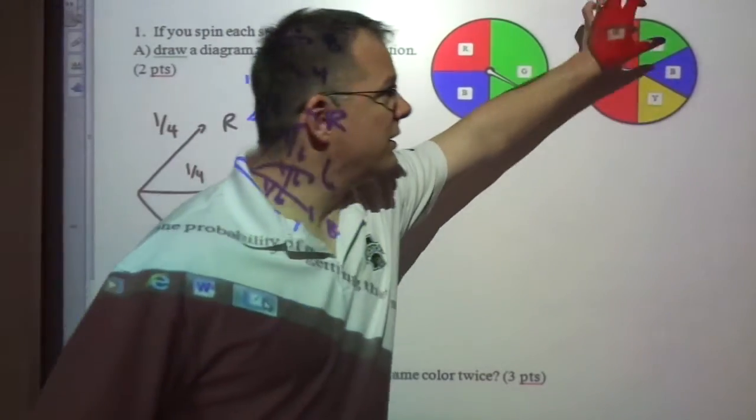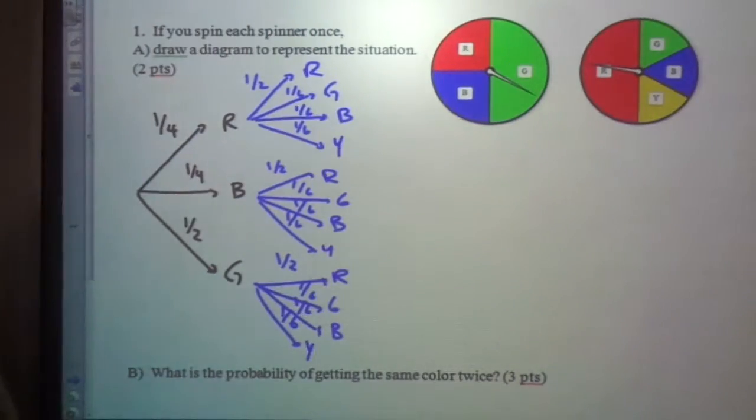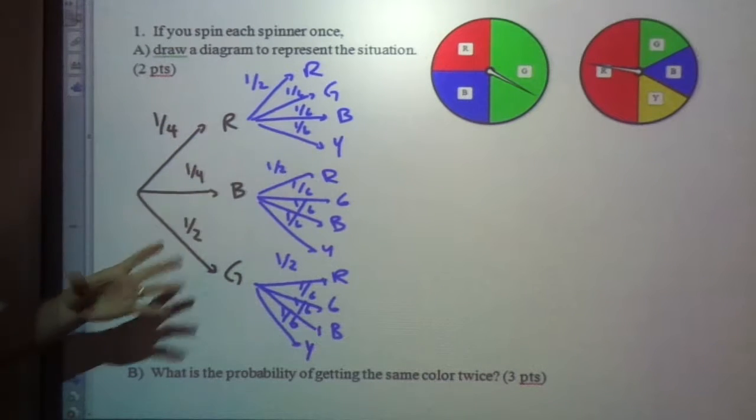These are each one-sixth, because six of those pieces would be making up the whole circle. So we could have red, green, blue, and yellow, one-half on red, one-sixth for everything else.